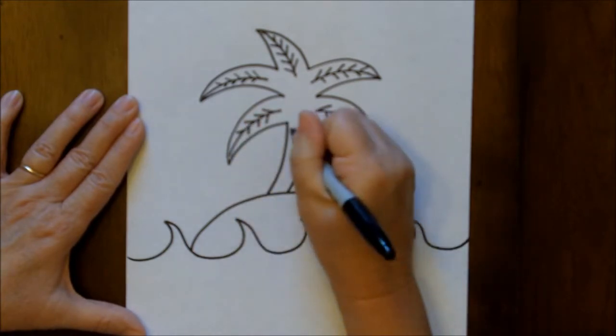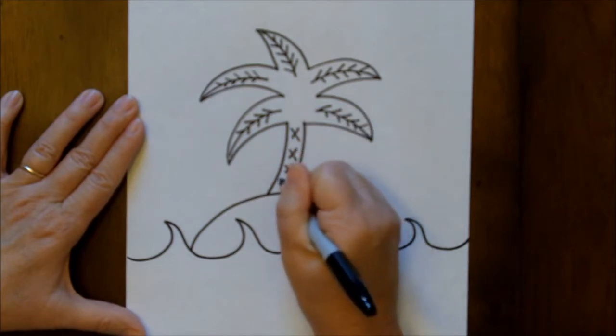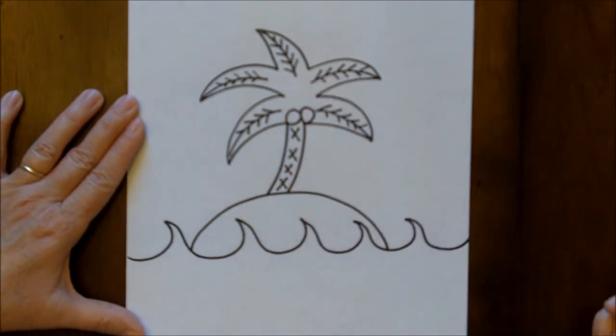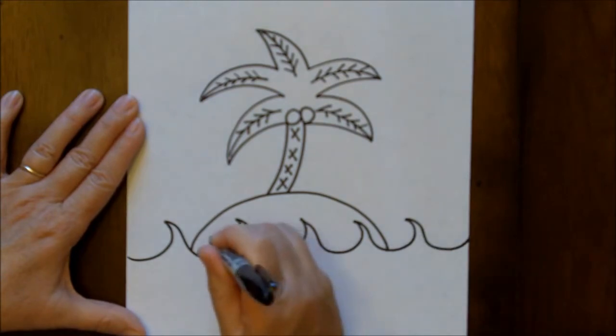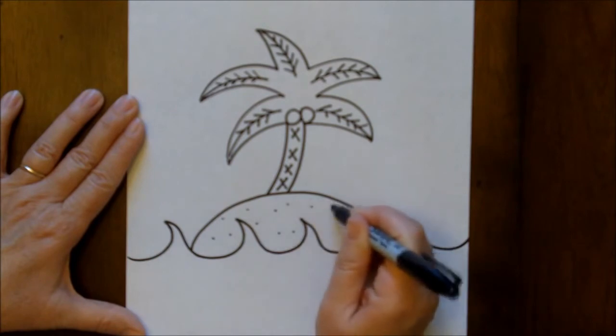Now, I like to put some X's down on the trunk of the palm tree. If you'd like to add a couple coconuts, it's always a good idea. And to represent sand, I just like to put a few little dots. Not many.